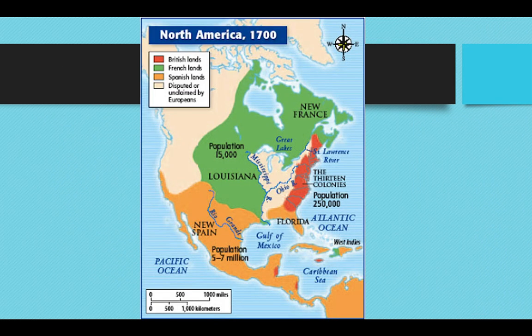This is what the map of North America looked like around 1700. It's worth noting that this is something of a European fantasy, because there are no Native American tribal borders shown — only the lands claimed by the British, the French, and the Spanish.